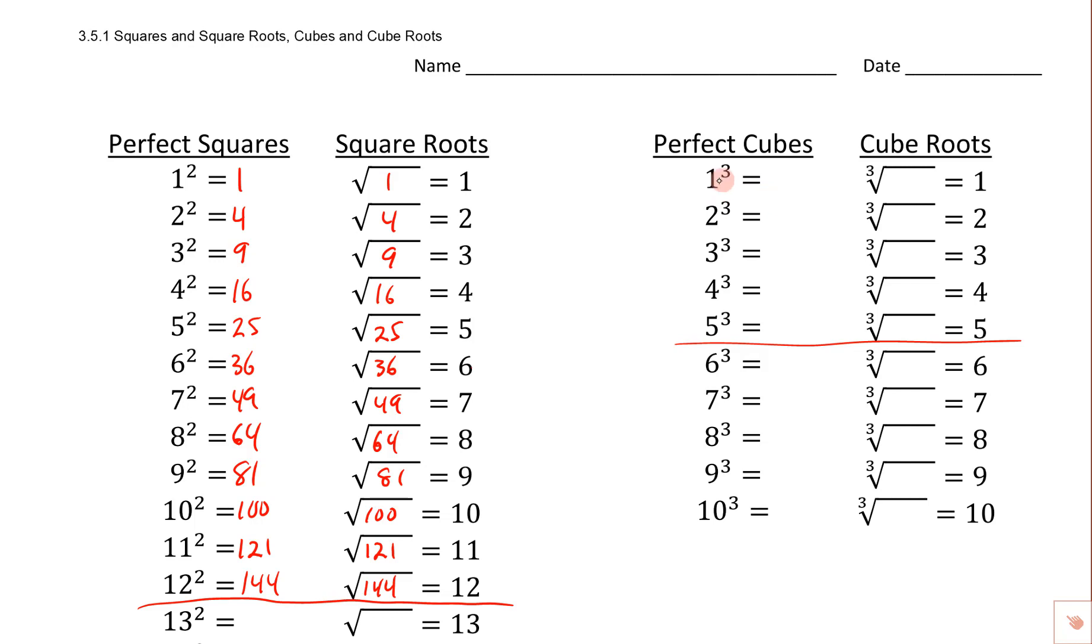So the perfect cube of 1, 1 cubed would be 1, that means the cube root of 1 is 1. 2 cubed is 8, that means the cube root of 8 is 2. 3 cubed is 27, so that means the cube root of 27 is 3.